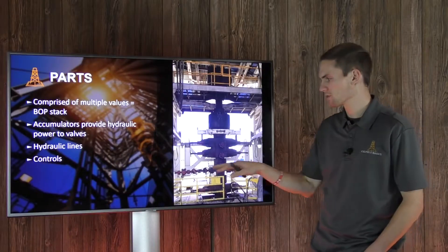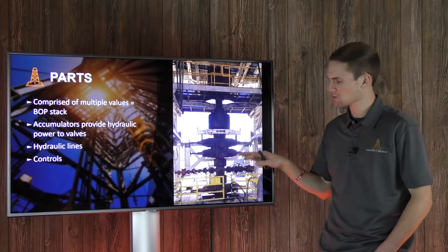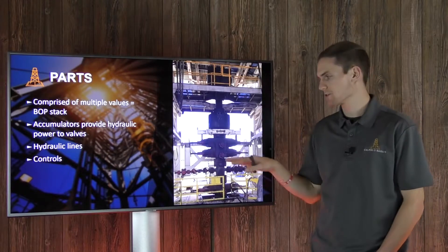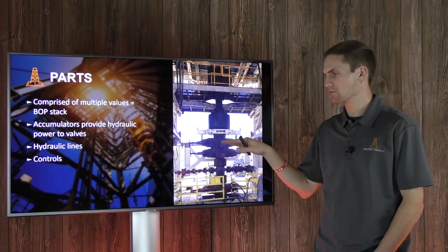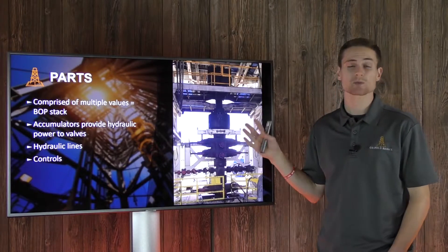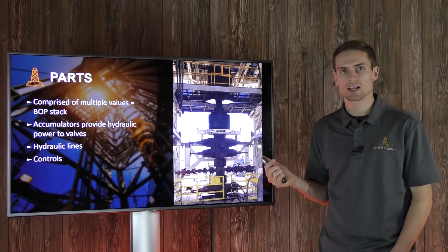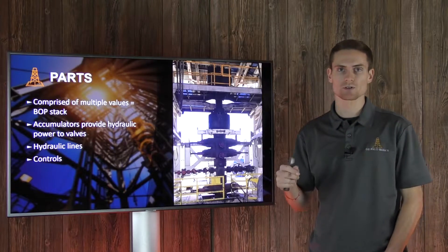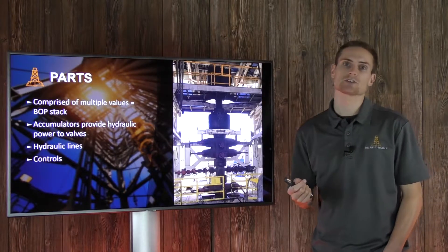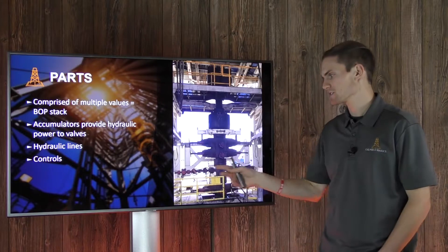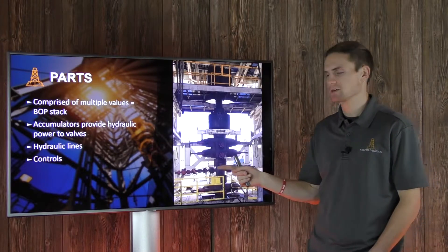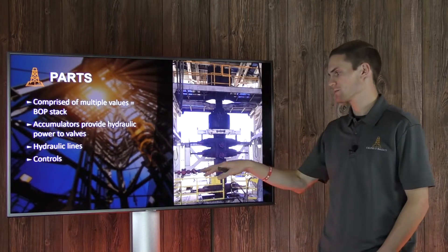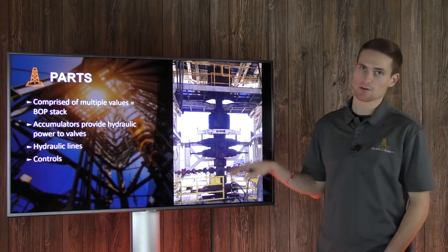I also want to point out the flow cross here, in between a couple of the valves on the BOP stack. What that allows us to do is: if we've shut in one of our upper rams and shut in the well because we've taken a kick, one side allows us to flow the well through a choke manifold to draw down the pressure at a managed rate, and the other side allows us to pump into the well to kill or circulate out that kick.